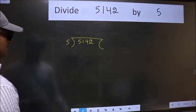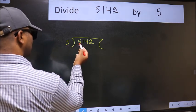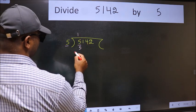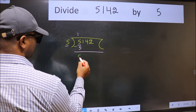Next, here we have 5 and here 5. When do we get 5 in the 5 table? 5 times 1 is 5. Now we should subtract. We get 0.